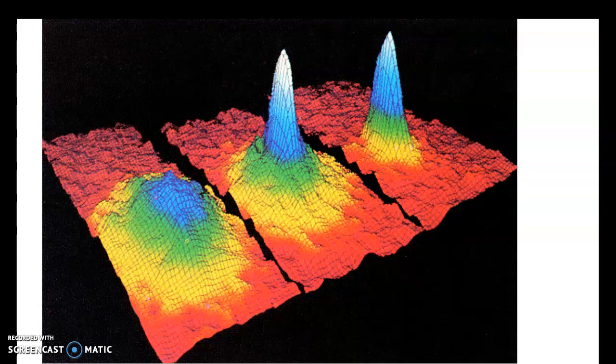A BEC occurs when the atoms start behaving like little waves and start overlapping one another until they eventually act like one wave and essentially become a super atom.